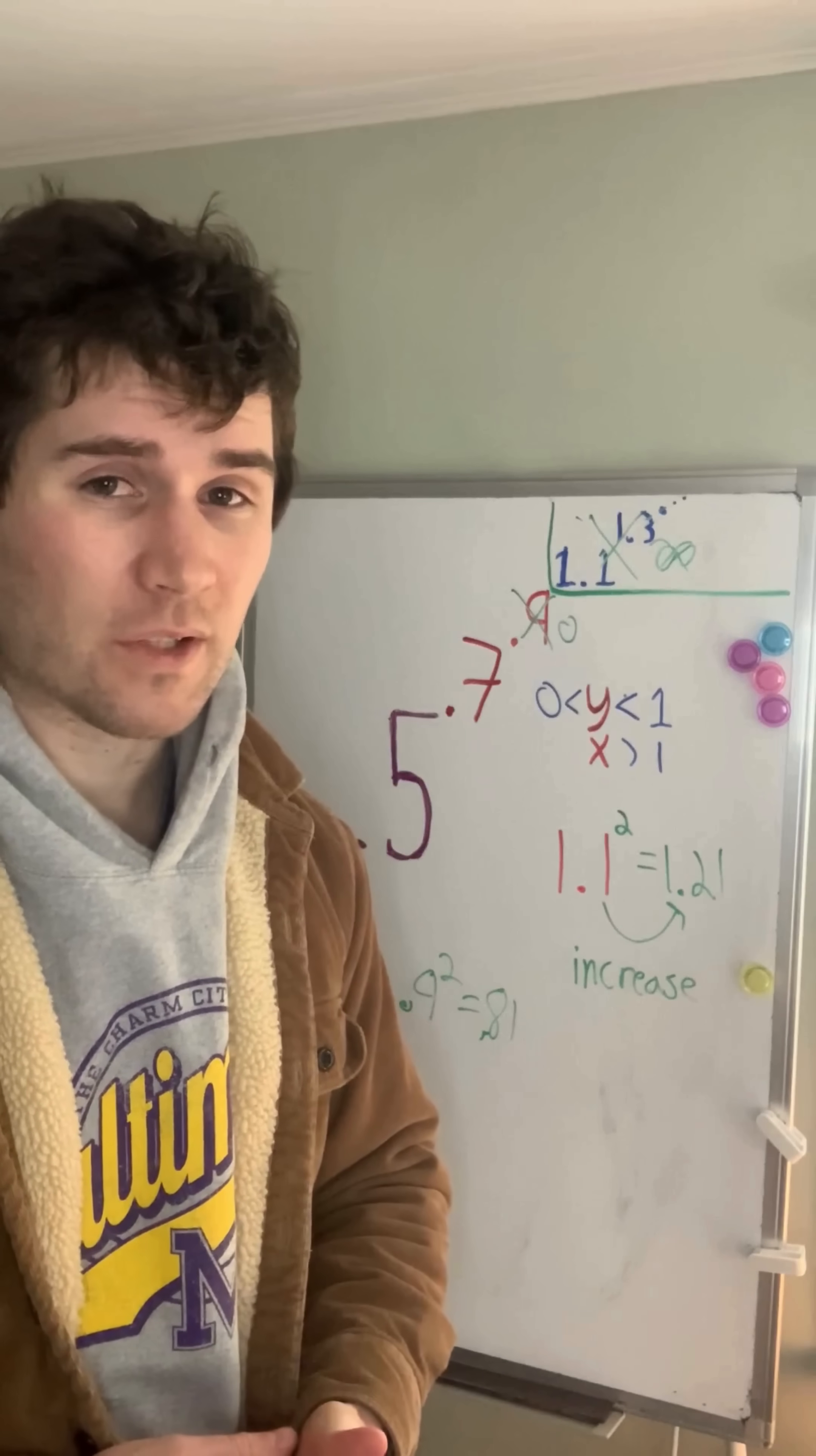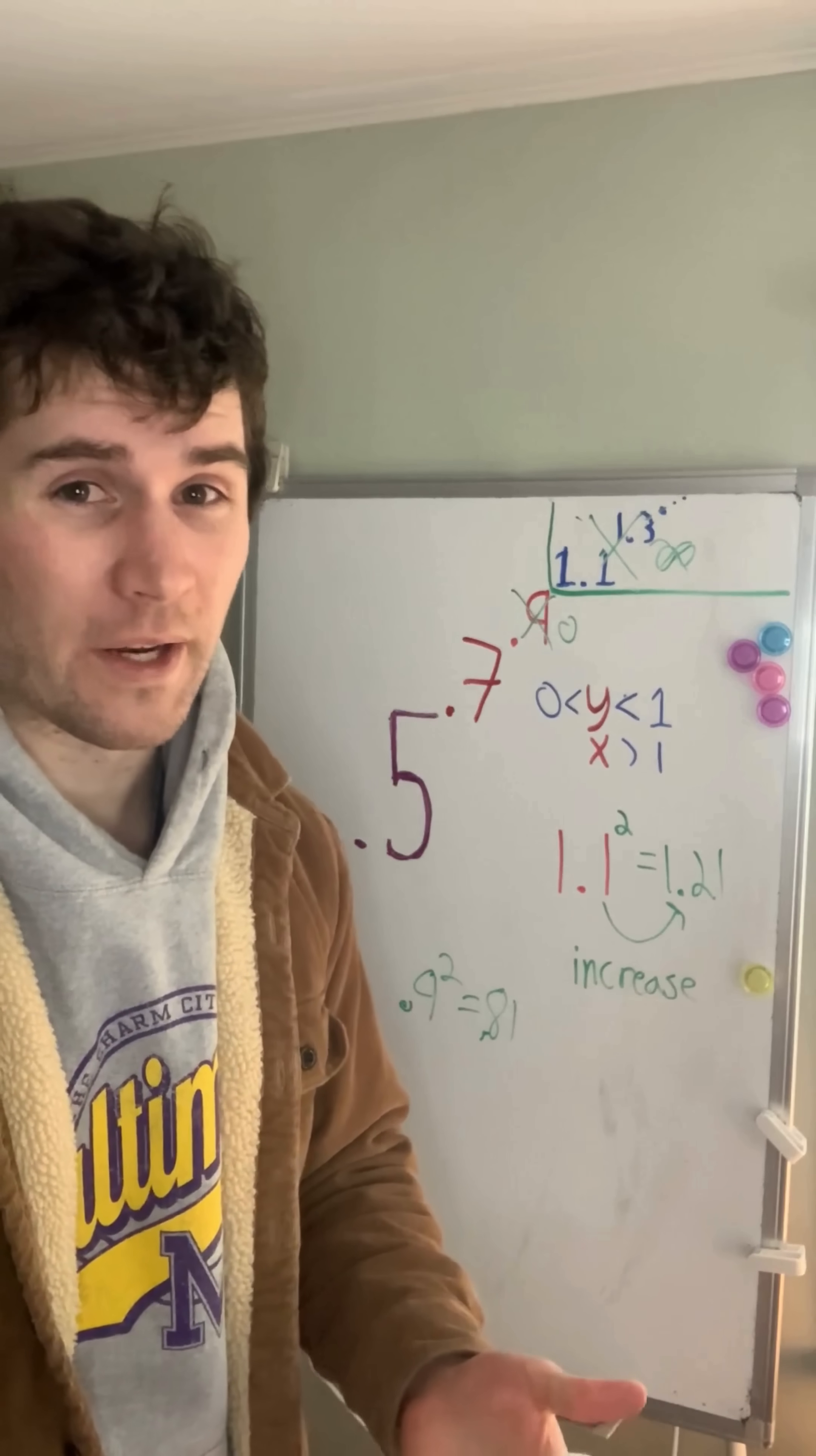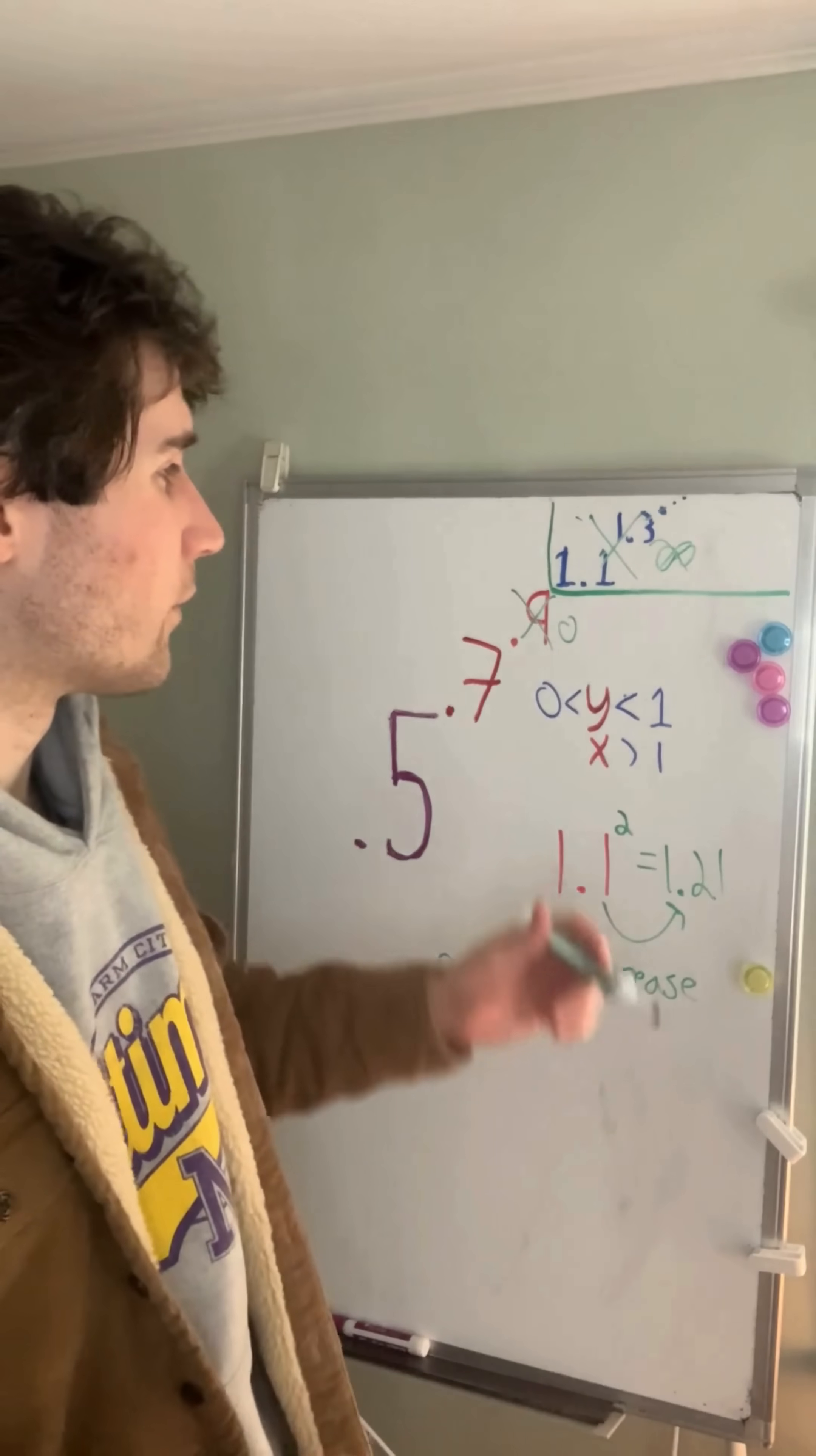And now we have 0.7 raised to the 0. Well, any number raised to the 0 is just 1. So we can write that in.